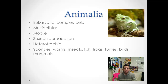Finally, animalia completes the domain eukarya. We're talking eukaryotic, complex cells, multicellular, and heterotrophic. Most animals can move. Some early outlier animals, like the sponges of the phylum porifera, can't move but fulfill everything else in this category — they're heterotrophic. Animals are very diverse, including sponges, worms, insects, fish, frogs, turtles, birds, and mammals.